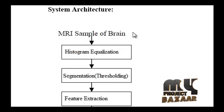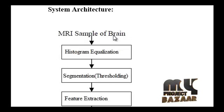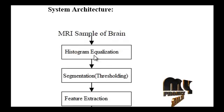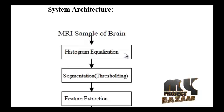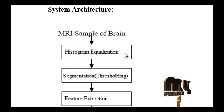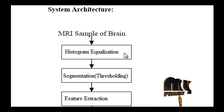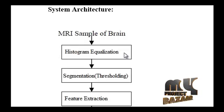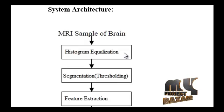First we load our input MRI brain image, then we pass the input image through histogram equalization for enhancement. Histogram equalization is a method in image processing for contrast adjustment using the image's histogram. This method usually increases the global contrast of many images, especially when the usable data is represented by close contrast values.